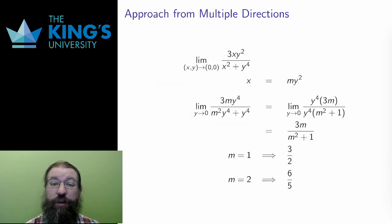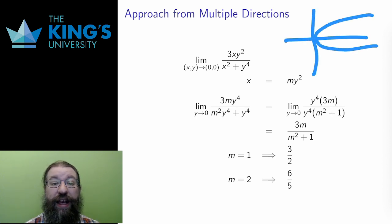Here is a similar example, but one where I choose a different path of approach. Instead of approaching along straight lines, I can approach on any path to the origin. Here, I approach on quadratic paths, where x = my², for various m giving wide or narrow parabolic paths.